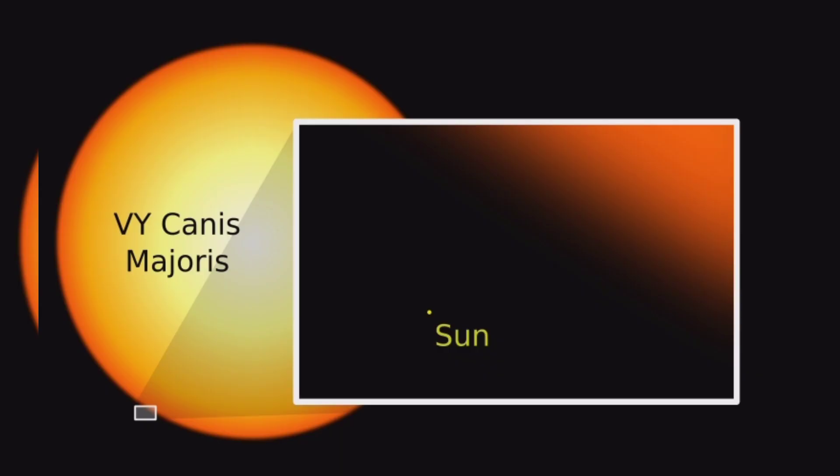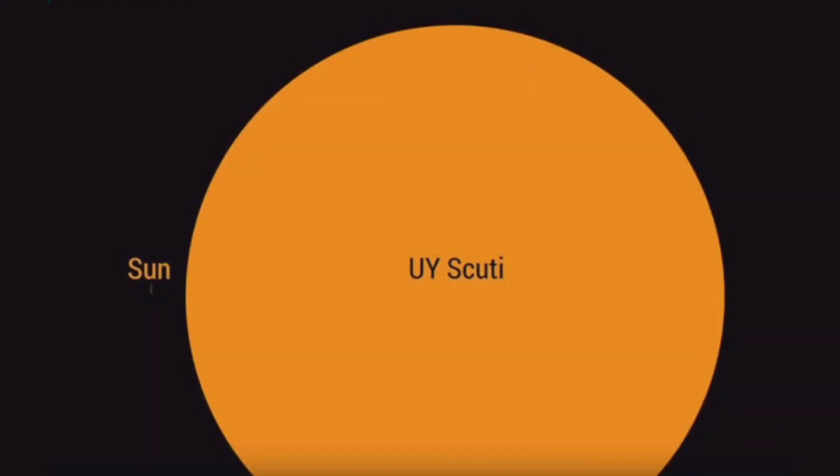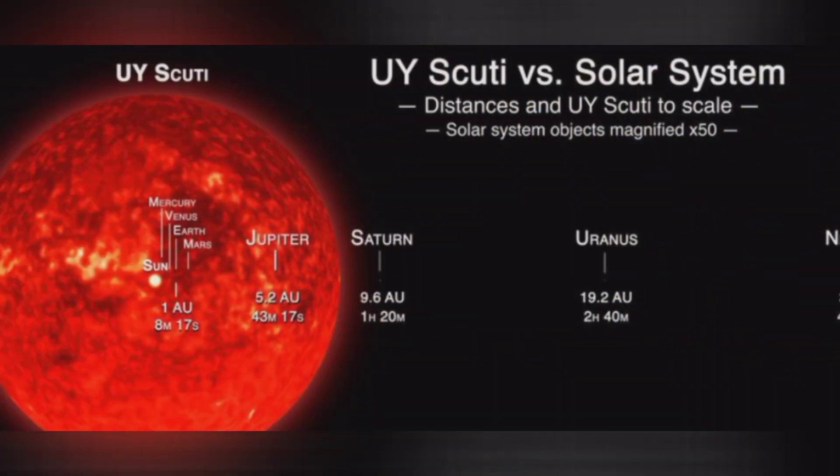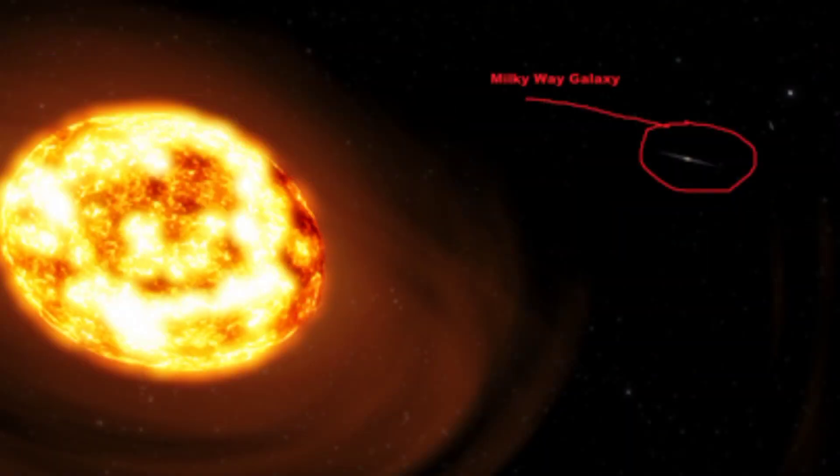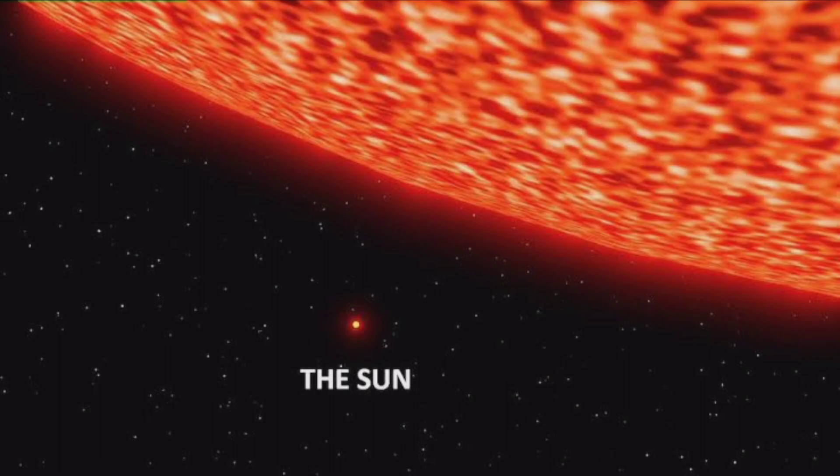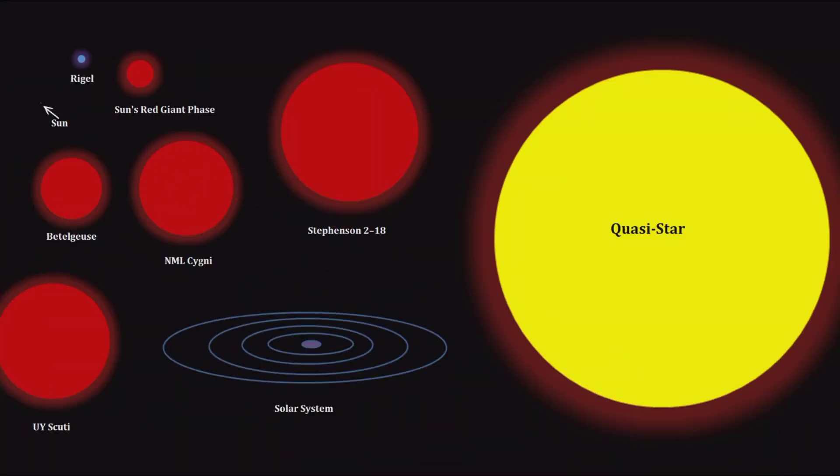To understand this cosmic behemoth, we turn to the experts. Famous astronomer Dr. Stella Starlight and Dr. Nova Nebula share their insights. Dr. Stella Starlight: UY Scuti is a red hypergiant, a dying star at the end of its life. It's so massive, so hot, that it's shedding its outer layers like a cosmic onion.